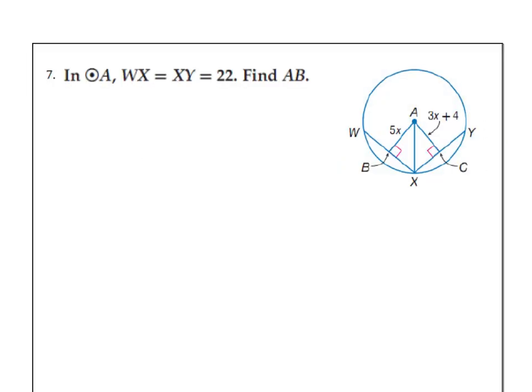So take a look at number 7. In circle A, WX equals XY. So they're telling us this distance equals this distance. And they're both 22. Find AB. I don't think we need to know that they are 22. We just need to know that they're equal to each other. Because if they're equal to each other, then this and this distance will be the same. Because those chords would have to be equidistant from the center.